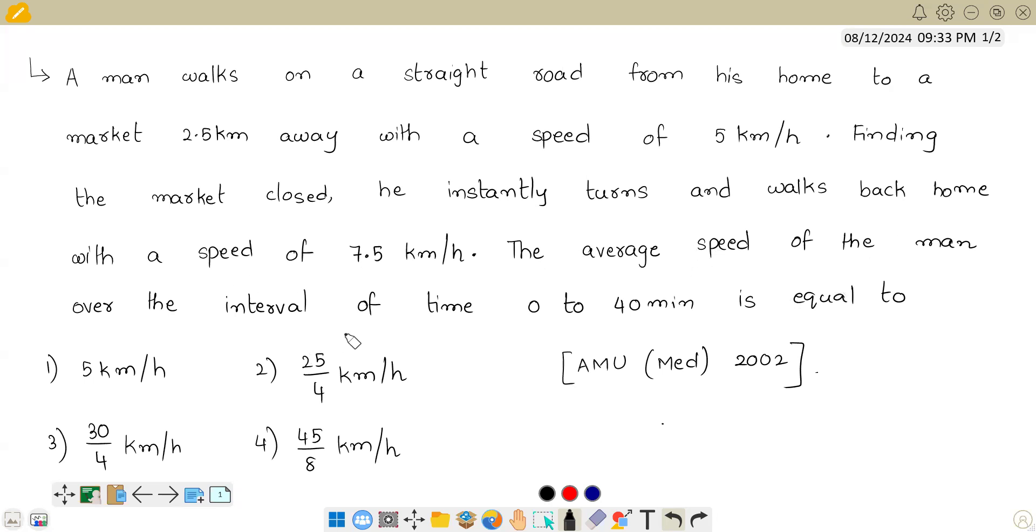The average speed of the man over the interval of time 0 to 40 minutes is equal to what? Okay, let us try to draw the situation. So as given, a man walks on a straight road from his home to a market 2.5 km away.